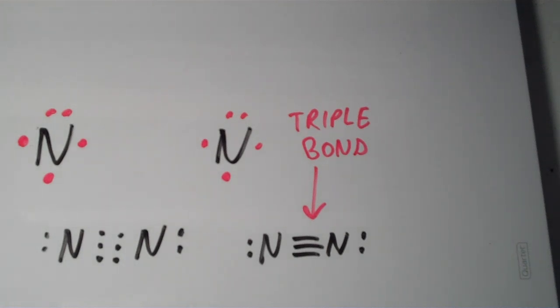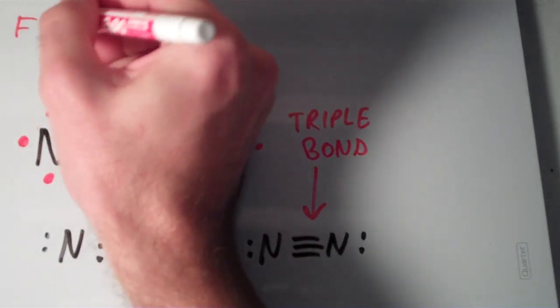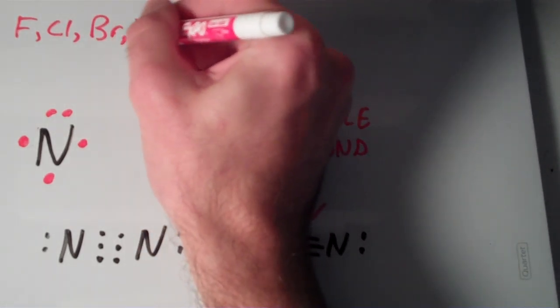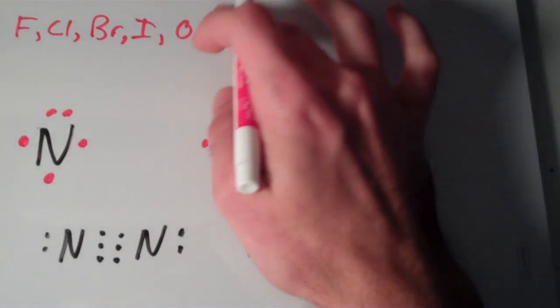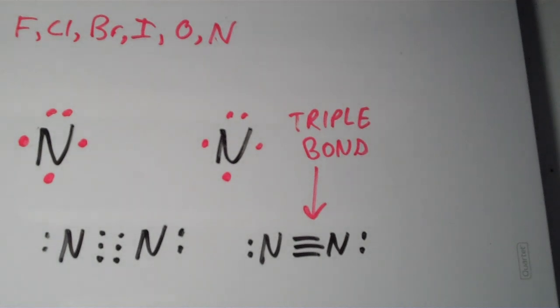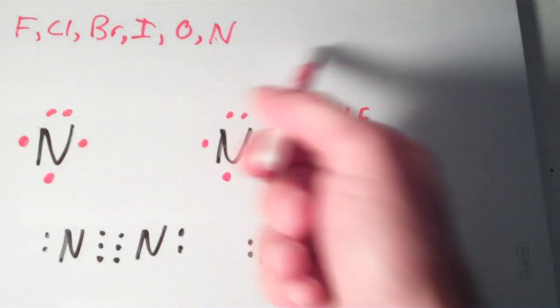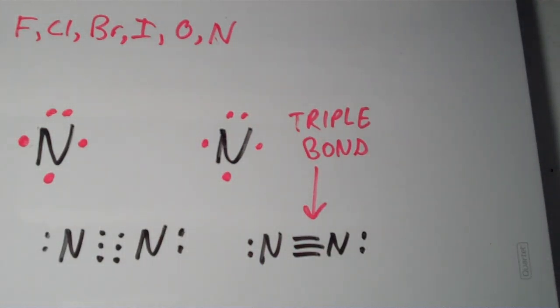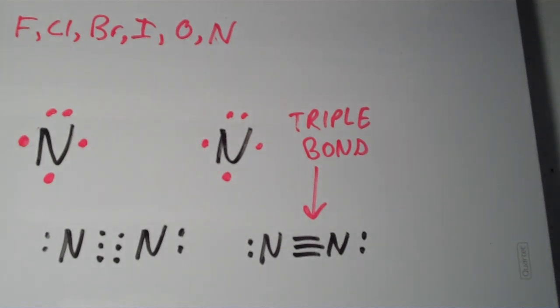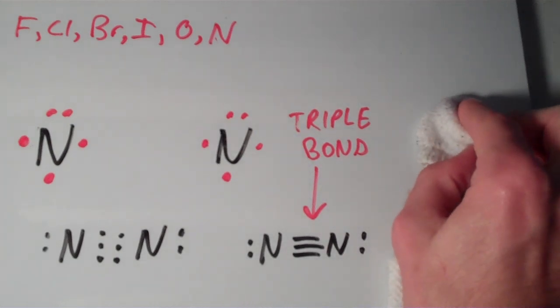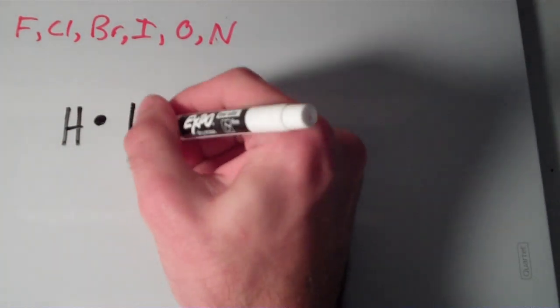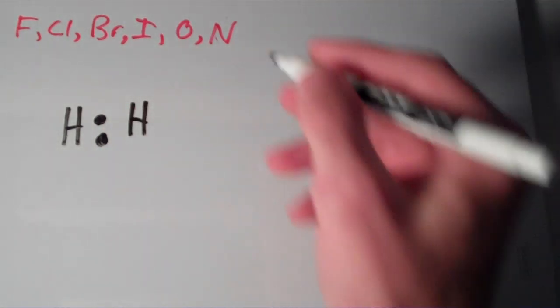To recap: we've seen that fluorine, chlorine, bromine, iodine, oxygen, and nitrogen should all exist as diatomic molecules — and we explained this just from Lewis theory, using only the octet rule to predict how these elements exist in nature. Hydrogen should also exist as a diatomic molecule. Hydrogen has one valence electron, and if it combines with another hydrogen, each has a duet. So we can add H₂ to the list. All of these elements are diatomic.